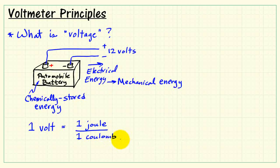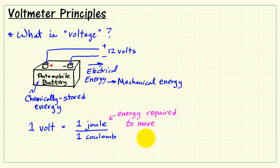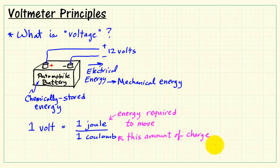Now what does that mean? Well, we say that there's an energy required of one joule, and this is the amount of energy that's required to move one coulomb of electrical charge. So voltage gives us a sense of how much effort is available to drive charge throughout a system.